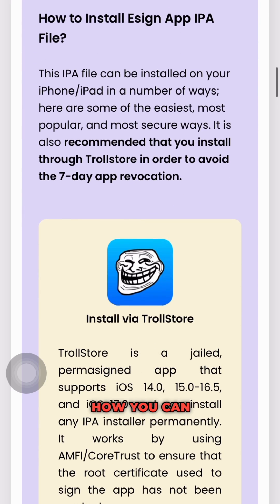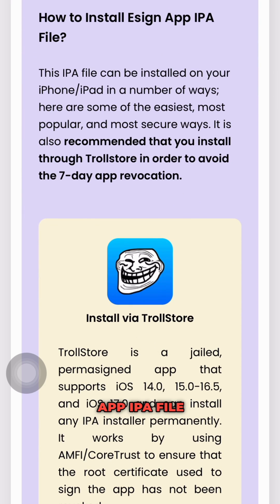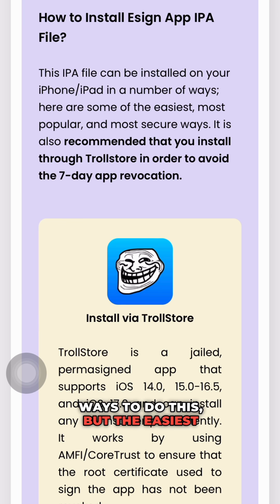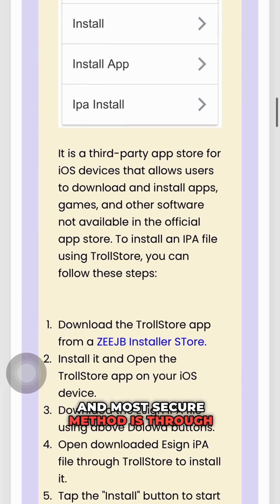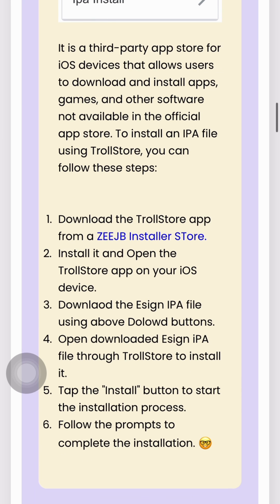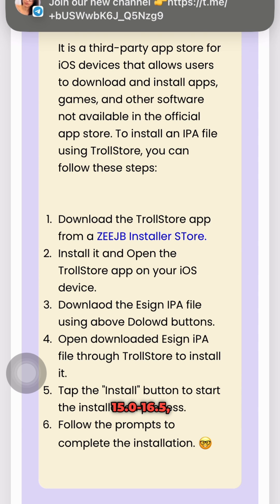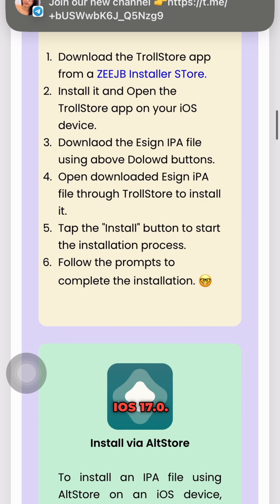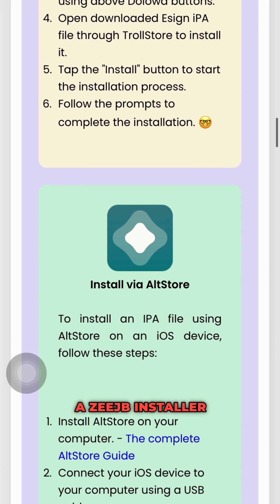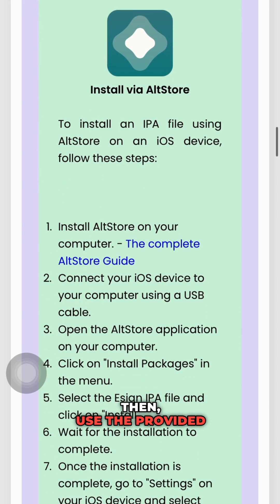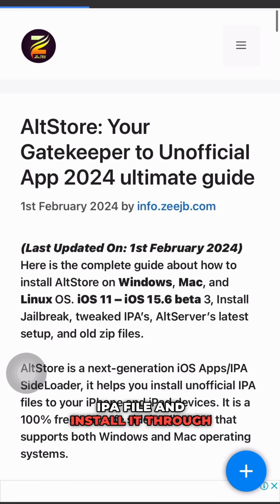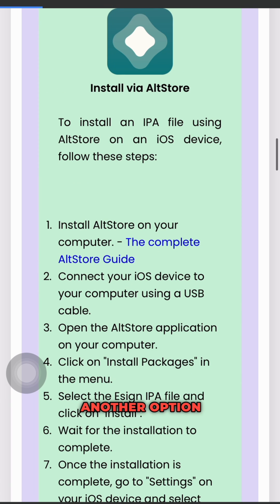Now let's talk about how you can install the ESIN app IPA file on your iPhone or iPad. There are a few different ways to do this, but the easiest and most secure method is through Trollstore. This is a jailed, perma-signed app that supports iOS 14.0, 15.0, 16.5, and the new iOS 17.0. Simply download Trollstore from a ZJB installer store and open it on your device. Then use the provided download buttons to get the ESIN IPA file and install it through Trollstore.